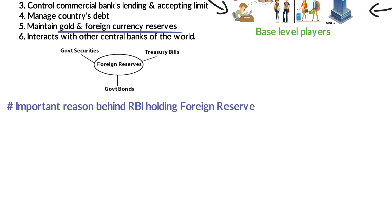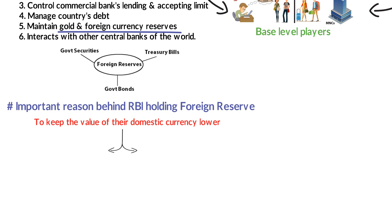There are quite a few reasons why central banks hold foreign currency reserves, but the most important reason is that countries use foreign currency reserves to keep the value of their domestic currency lower than the dollar — a process also called devaluating the currency. This raises two follow-up questions: A) Why would a country do that? And B) How does a country keep its currency lower than the dollar?